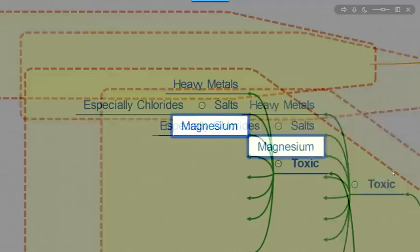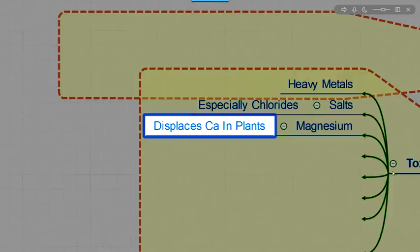Magnesium. An imbalance of magnesium and calcium. It'll displace the calcium in the plant. And that, in turn, causes the plant to stunt its growth. So you want to basically be low on magnesium and high on calcium. Not the other way around.